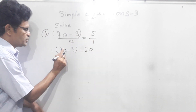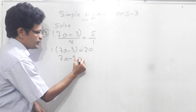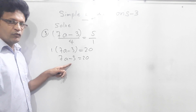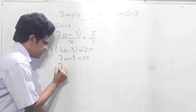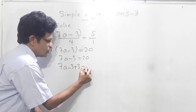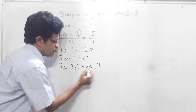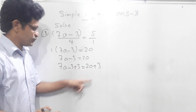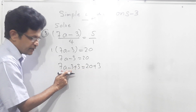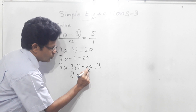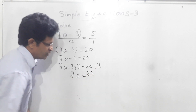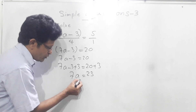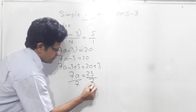Now 1 into 7a is 7a, 1 into minus 3 is minus 3, equals 20. To get rid of this minus 3, we have to add plus 3 on this side. This side also we have to add plus 3. Then plus 3 and minus 3 will get cancelled. 7a equals 20 plus 3 is 23. Now we have to get rid of this 7; for that we have to divide this side by 7, then this side also divide by 7.